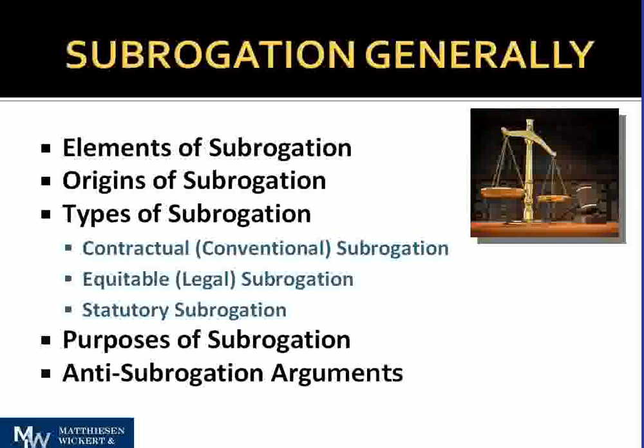The elements of subrogation: the subrogee — the insurance company — has paid an obligation to the subrogor. The subrogee must not volunteer to pay the debt of the subrogor. The subrogee is secondarily, not primarily, liable for the obligation, and the subrogor — the insured — will not suffer an injustice if subrogation is allowed. Those are the time-tested roots of subrogation.